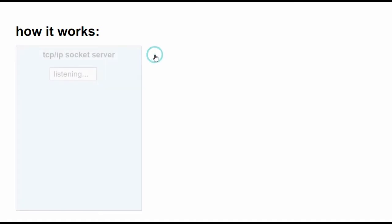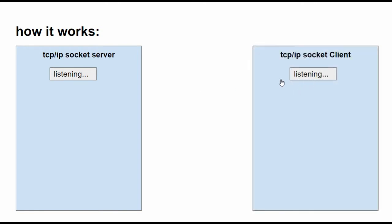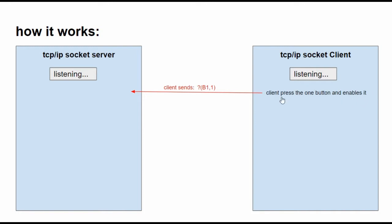Let's show how it works. Normally the communication between client and server is inactive. When an event occurs in the client, for example pressing button 1, the client sends the event to the server in the value format: comma, value in parentheses. You can specify multiple values in each call.